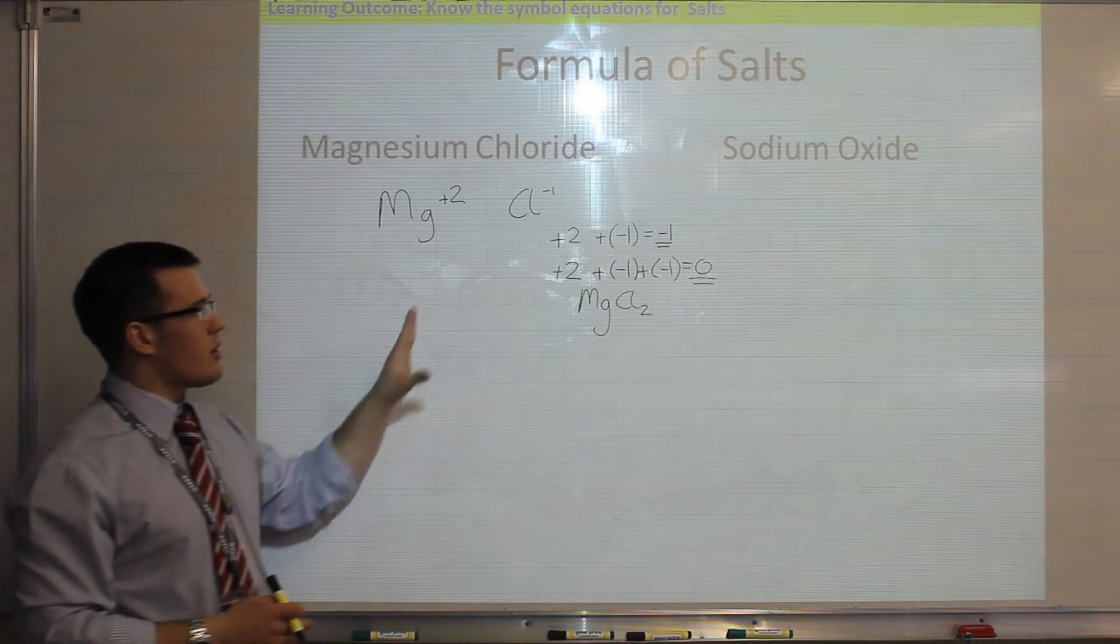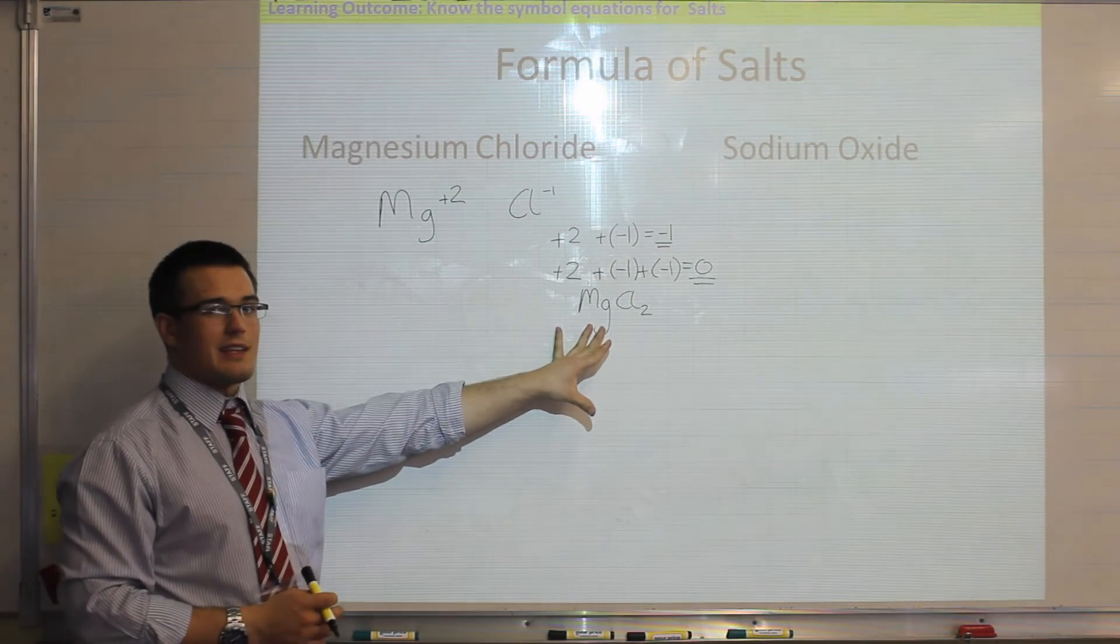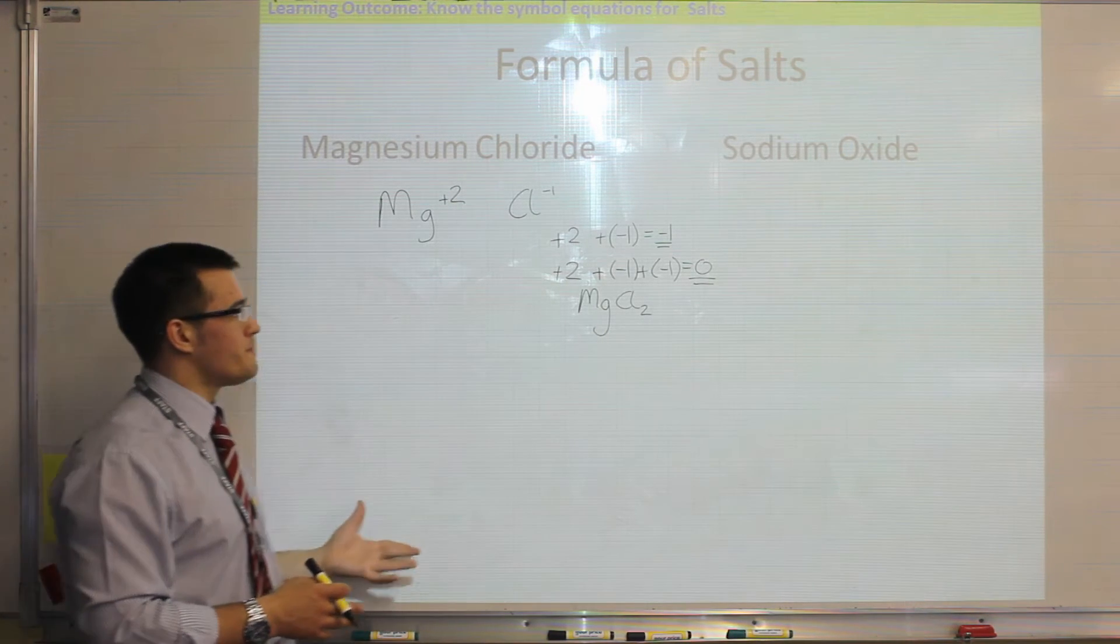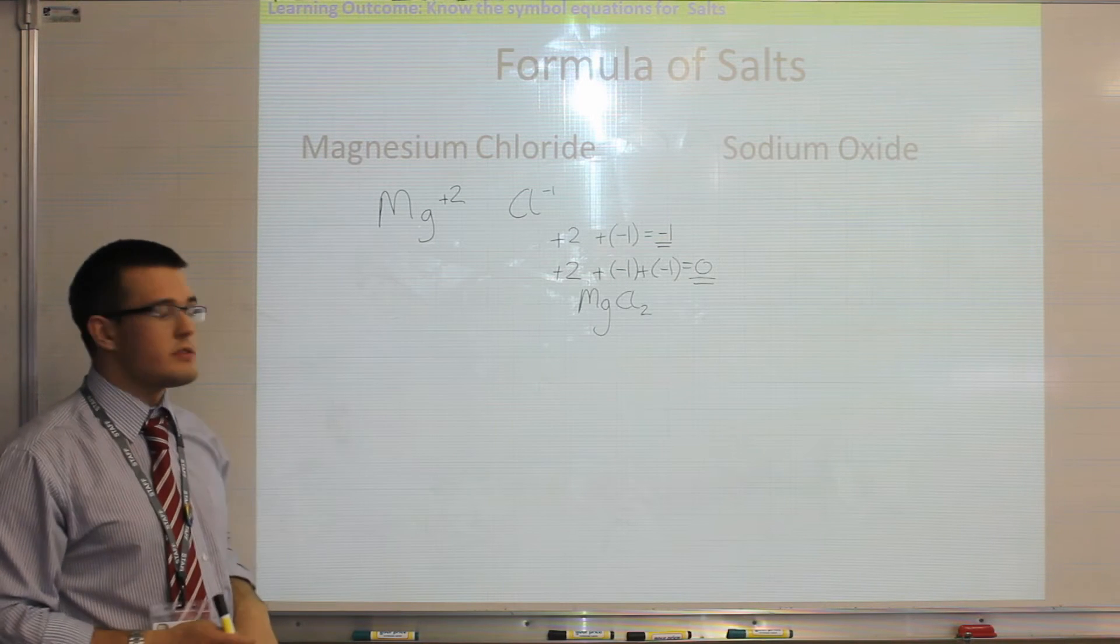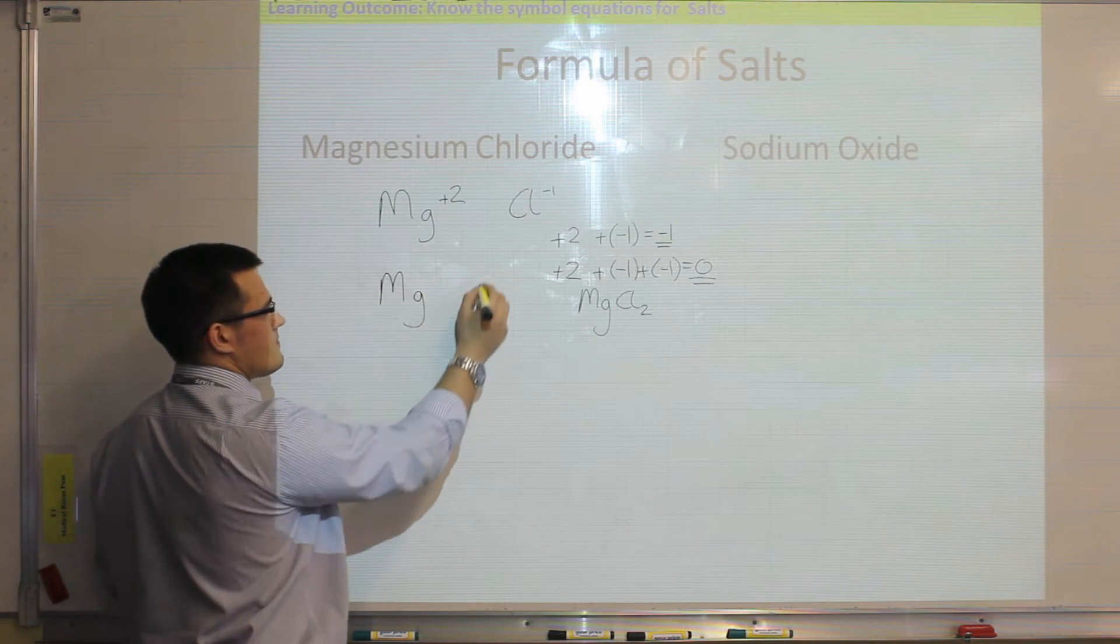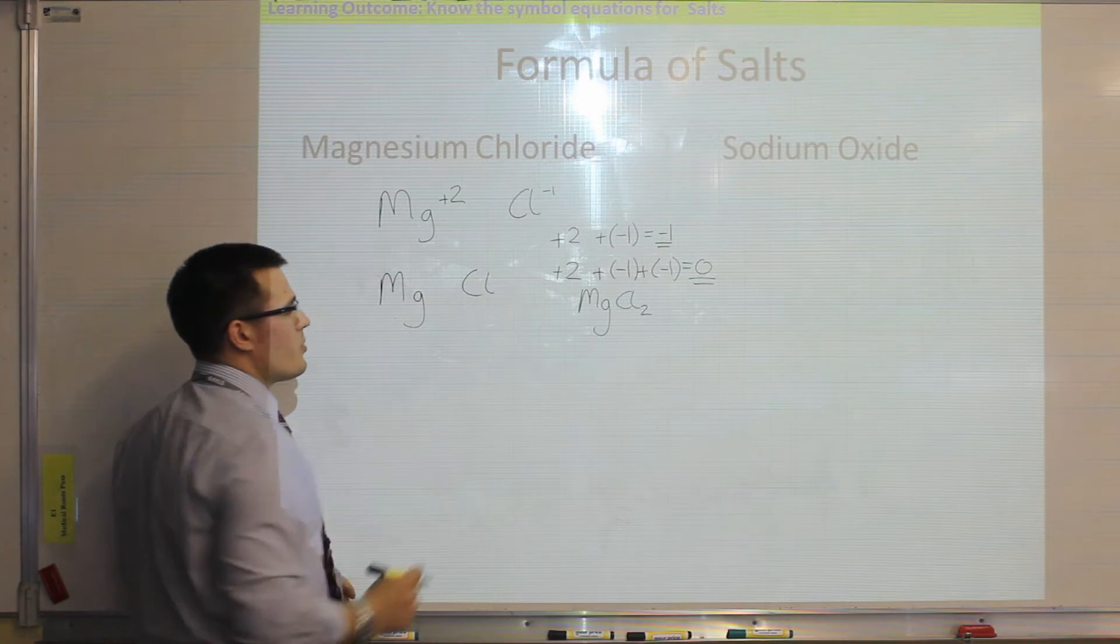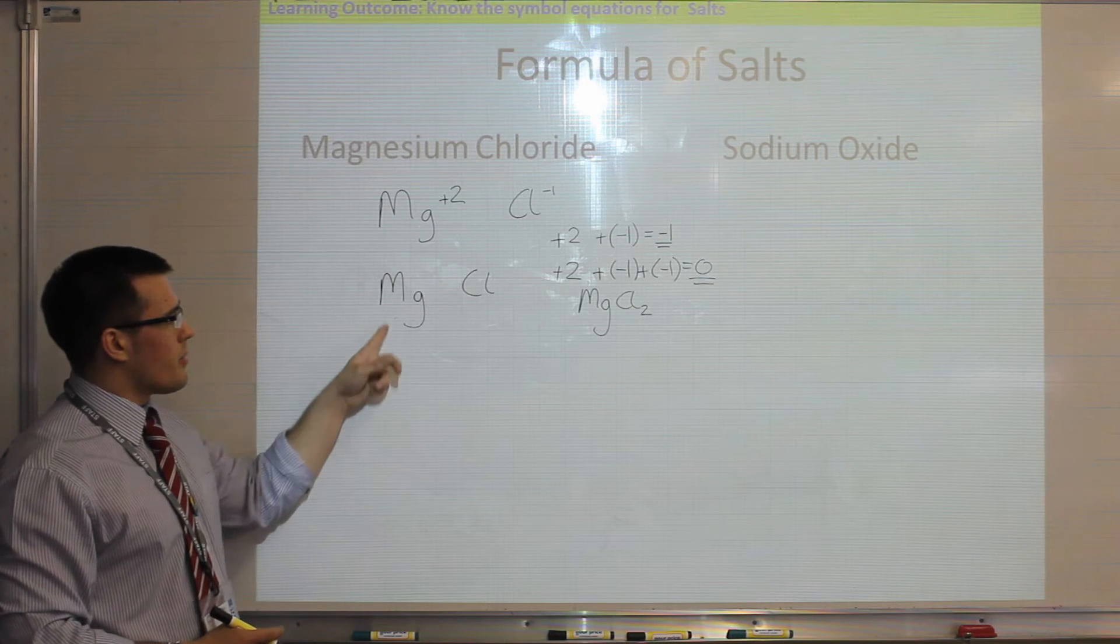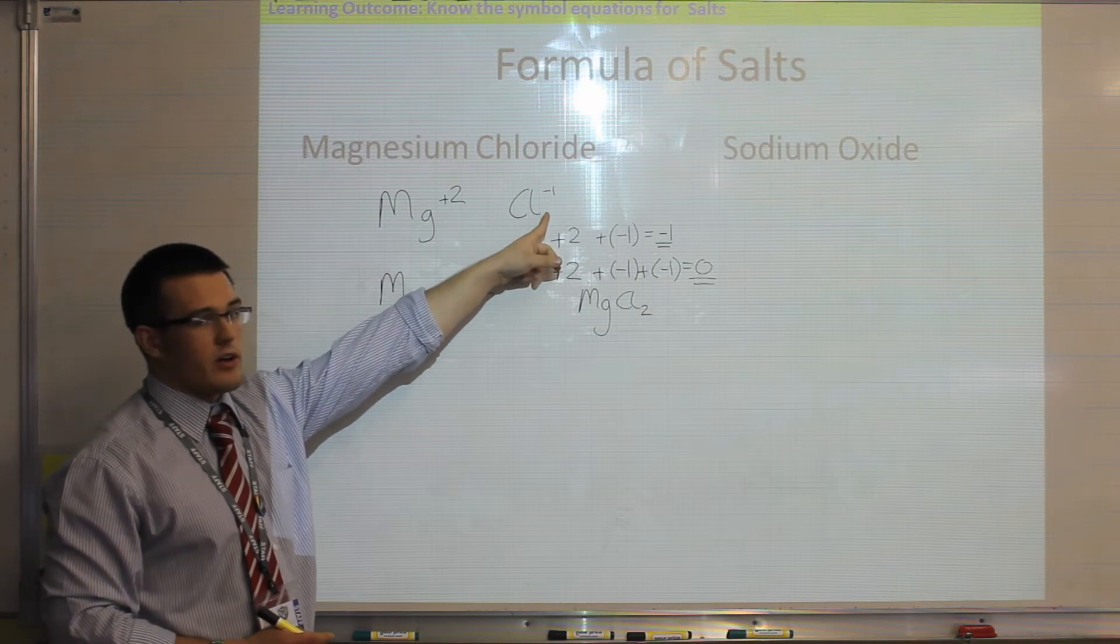Now, some people are able to do that method very quickly and easily in their heads, however, some people struggle with that method, so we're going to look at an alternative as well. Once you've wrote down your two ions, what you can then do is just write out the symbols again. But this time, to work out how many you need, you multiply them by the charge on the opposite ion.